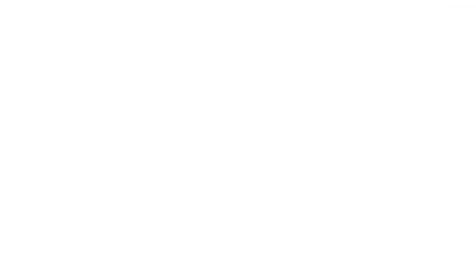Today we looked at an application of vector-valued functions: motion in space. We used vectors to represent position, velocity, and acceleration in each direction, knowing that velocity is the derivative of position, and acceleration is the derivative of velocity. For general speed — a scalar — we take the magnitude of the velocity vector. Practice a few of these assignments and we'll discuss them further in class.